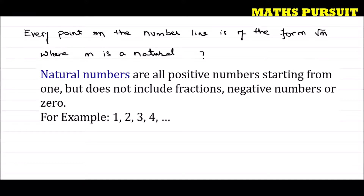From the definition, natural numbers are all positive numbers. They do not include fractions, they do not include zero, and they do not include negative numbers. So natural numbers are only all positive integers.